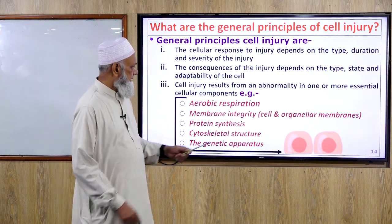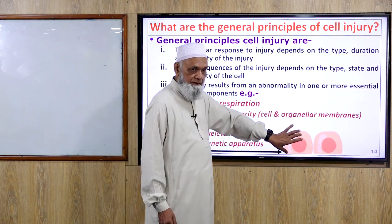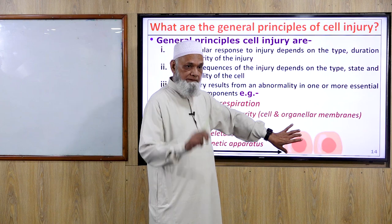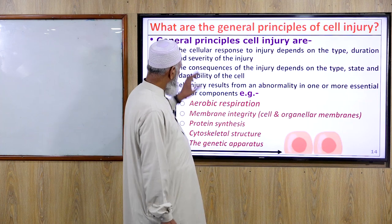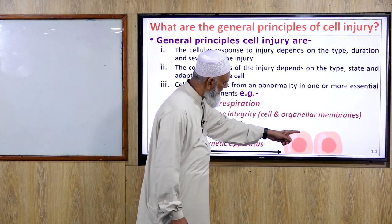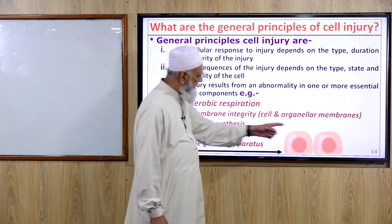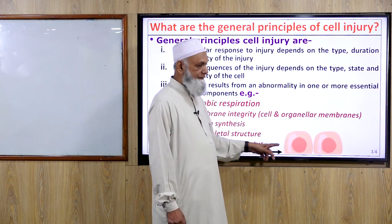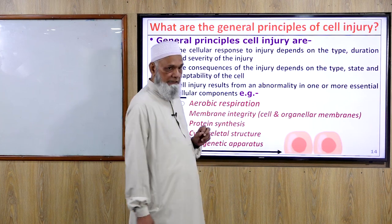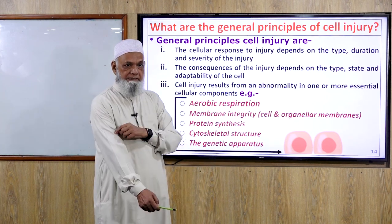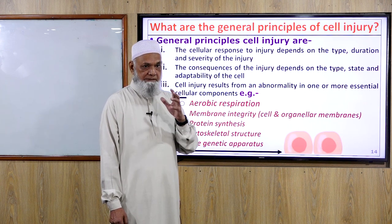The injurious agent's type, duration, and severity are key factors. The cell's type, state, and adaptive capability also matter. For example, skeletal muscle cells, cardiac muscle cells, and neurons have limited adaptive capability. Cell injury from abnormalities includes: aerobic respiration causing ATP loss, cell membrane integrity loss, decreased protein synthesis, cytoskeletal destruction, and gene mutation of the genetic apparatus.